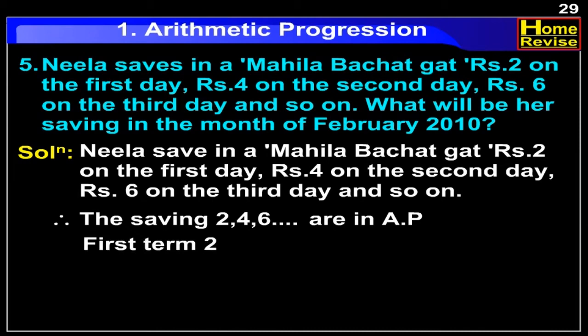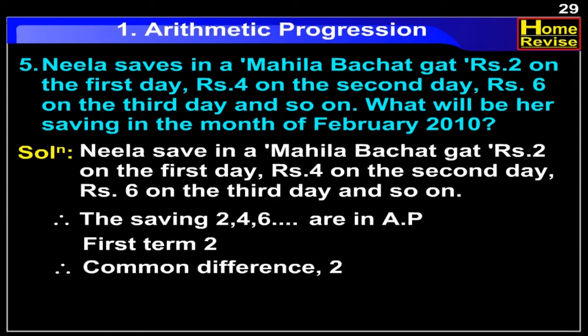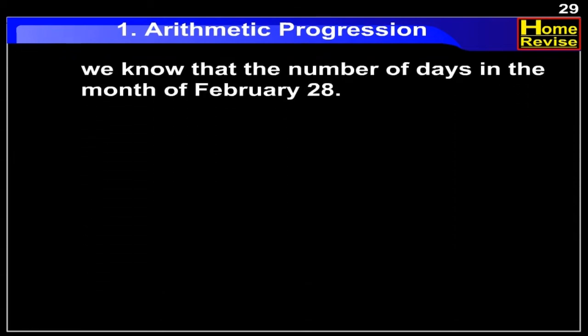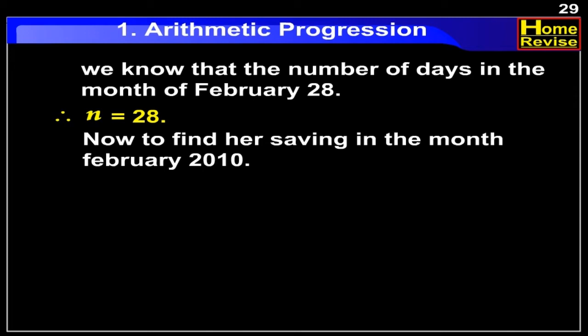With the first term A equal to 2 and the common difference D equal to 2. Now, we know that the number of days in the month of February is 28. Hence, N is equal to 28. We have A is equal to 2, D is equal to 2, and N is equal to 28.